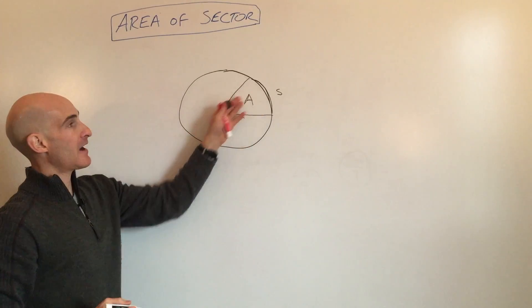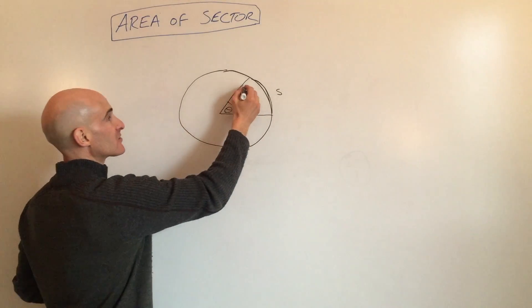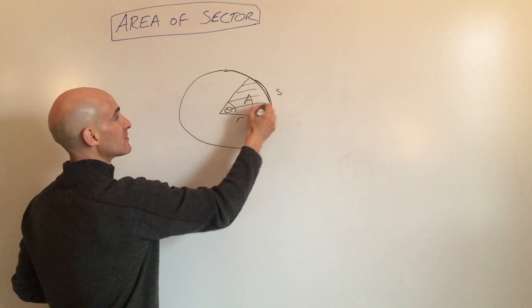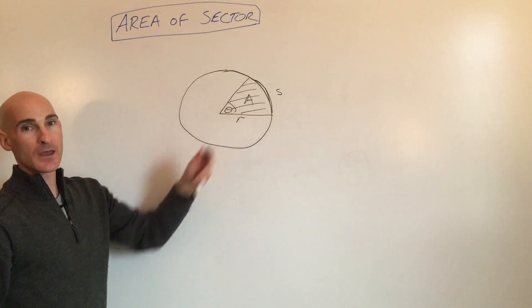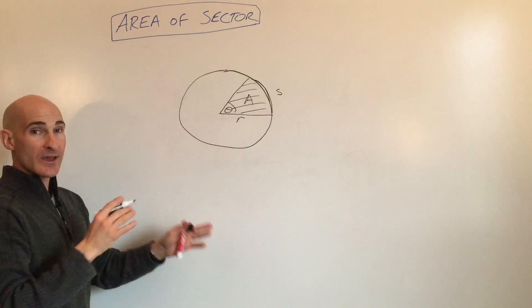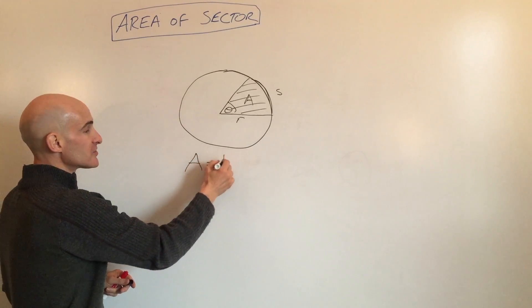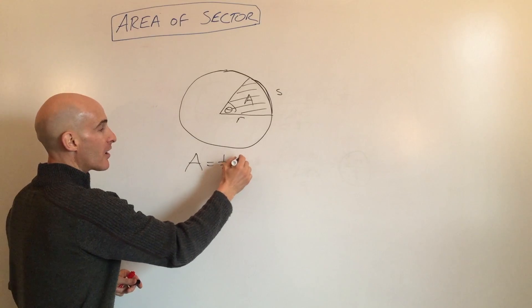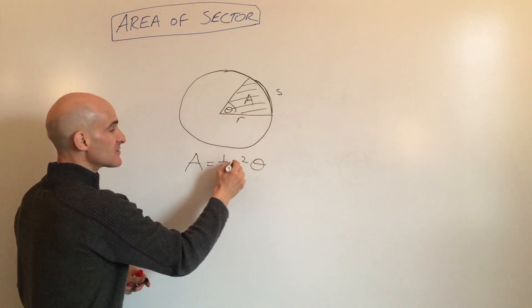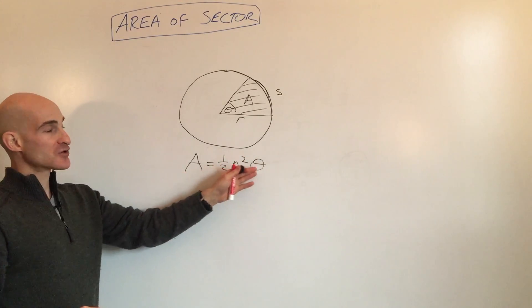Call this A for the area of this region, the area of this sector, this section of the circle right there. So the formula that relates all of these variables here is area equals one-half r squared times theta. So one-half r squared theta.